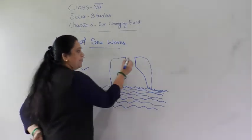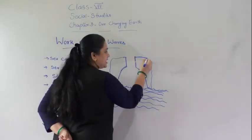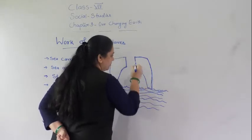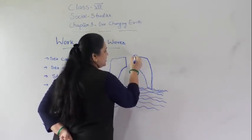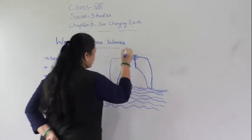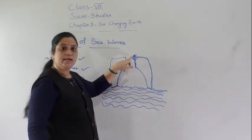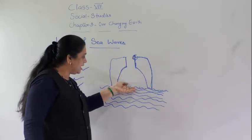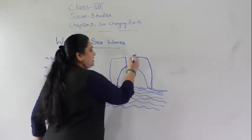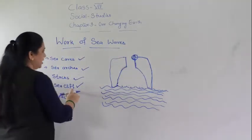When these types of rocks stand up, this point is called the sea cliffs. This rocky coast standing exactly above the sea is called the sea cliff.